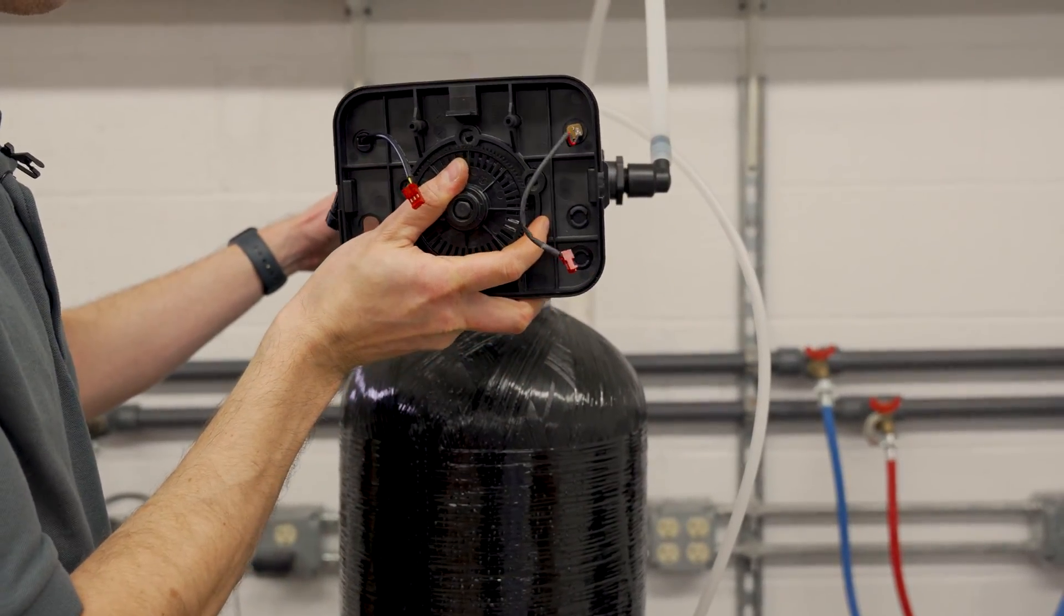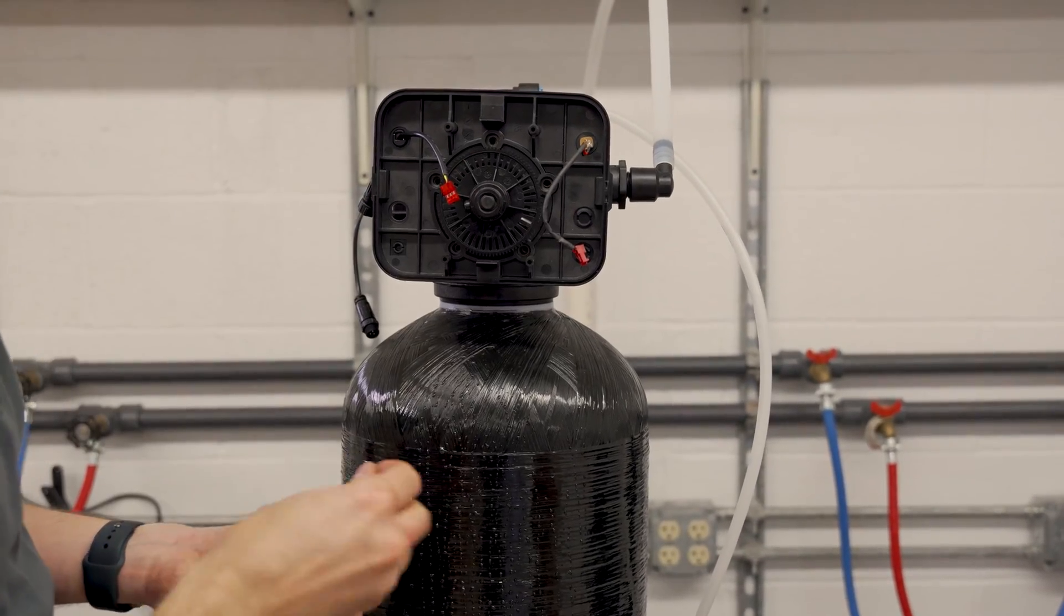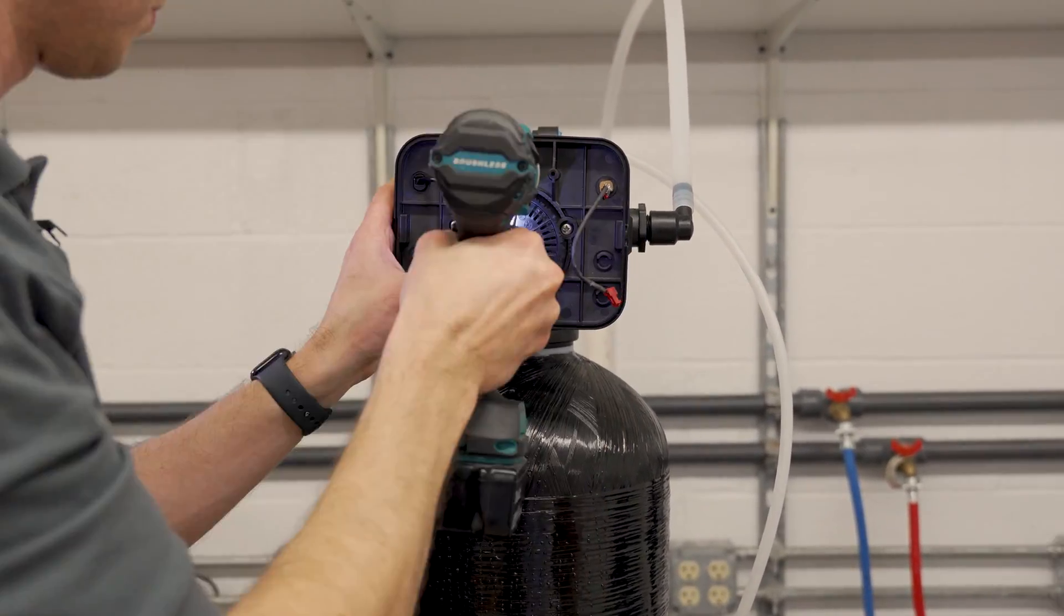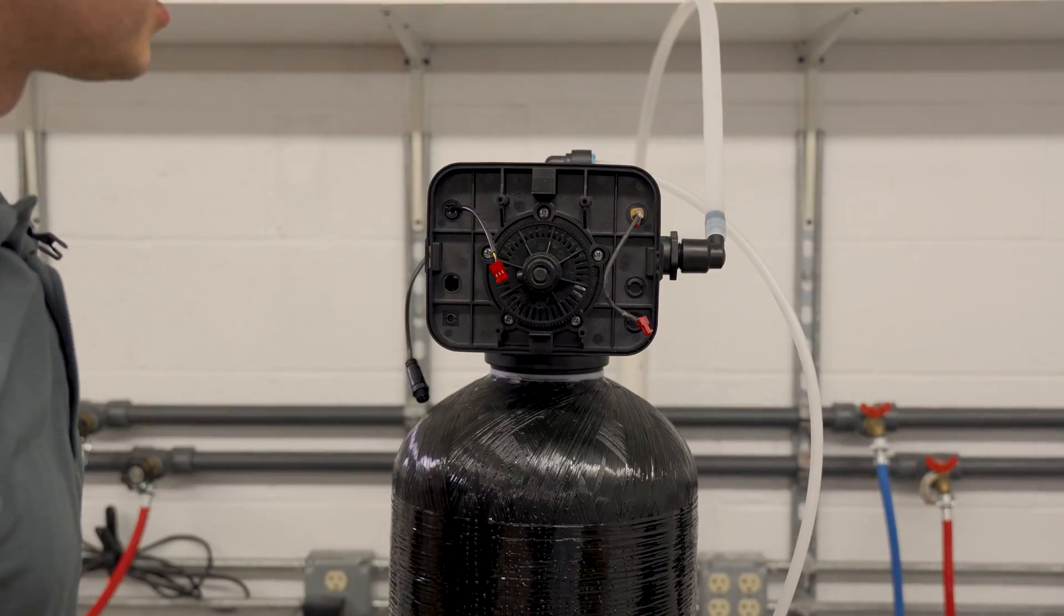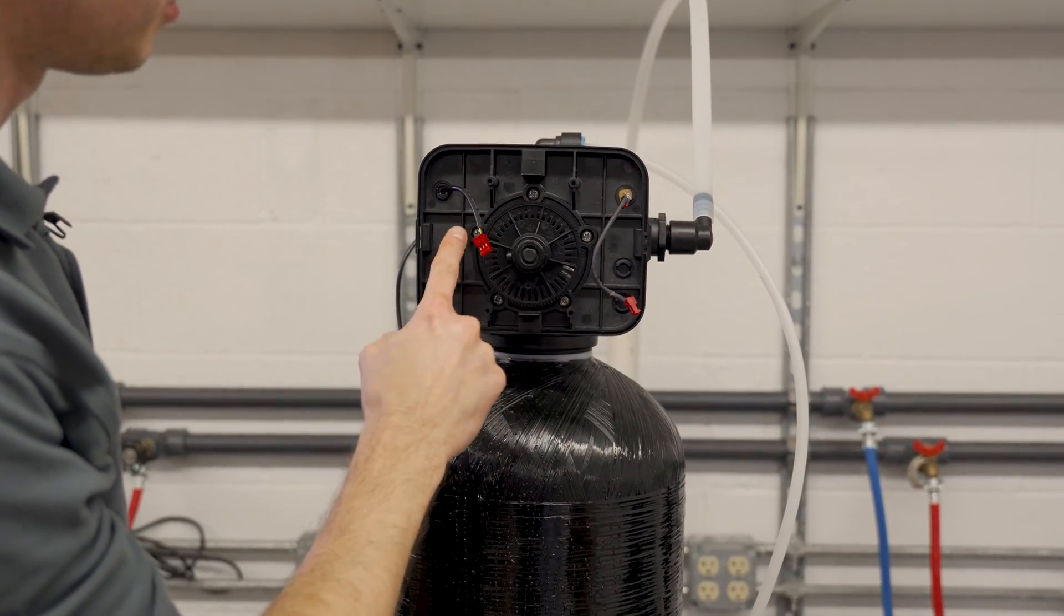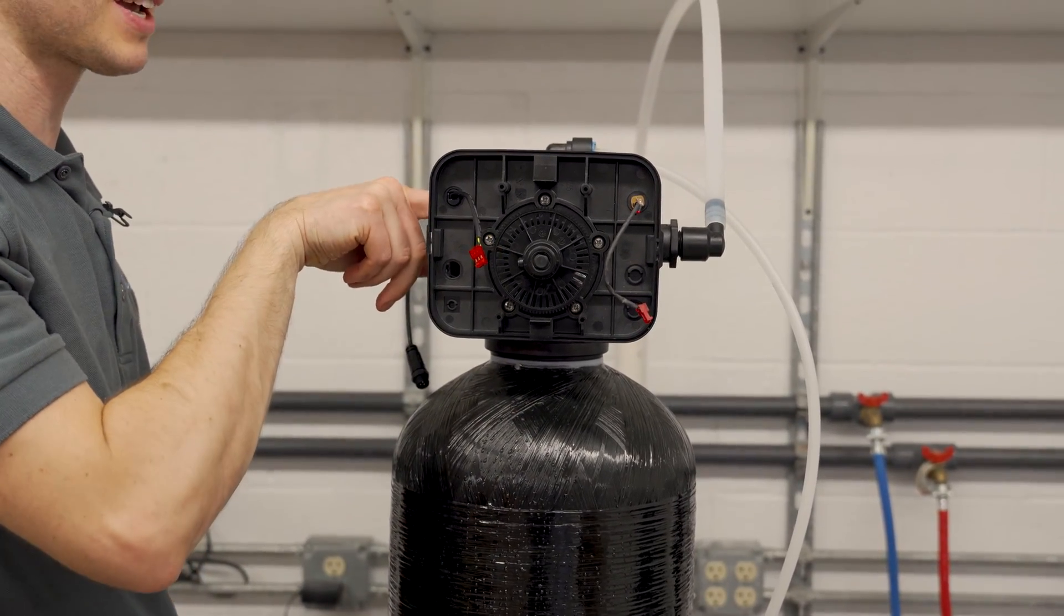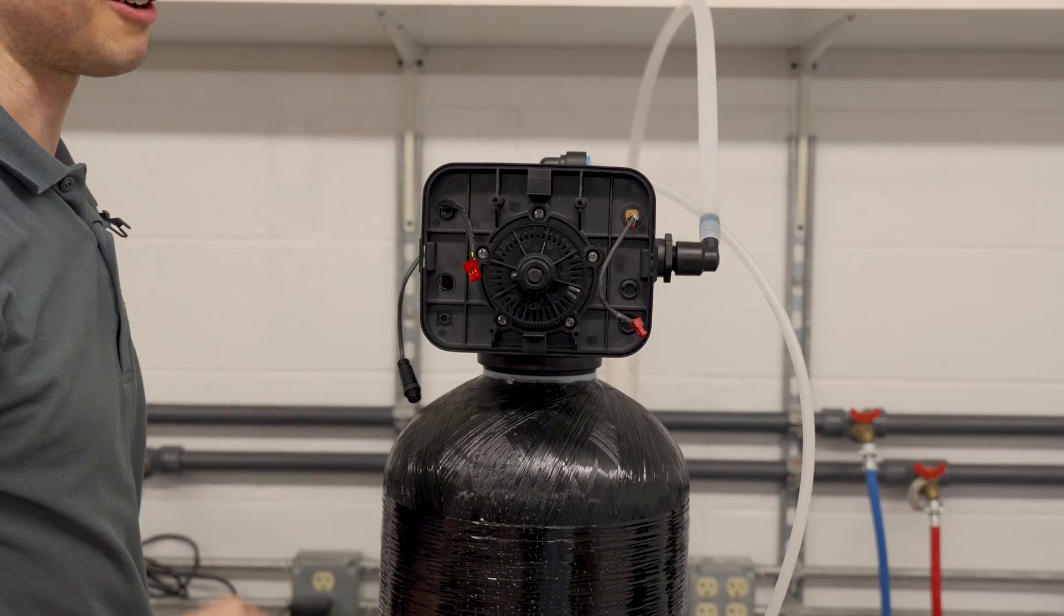We can then put the piston back in and replace the screws. When tightening the screws, make sure to go in a star pattern, alternate, and if you look at it from the back, make sure that the back plate is flush with the valve body.